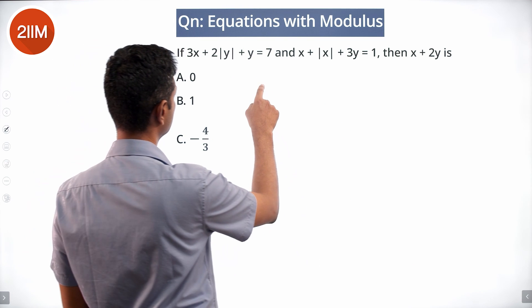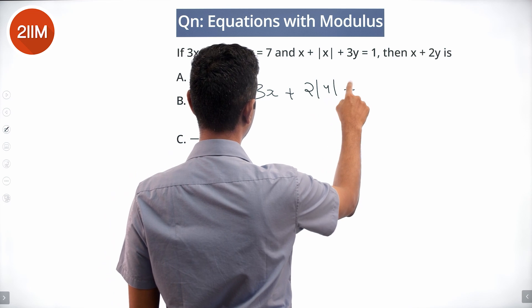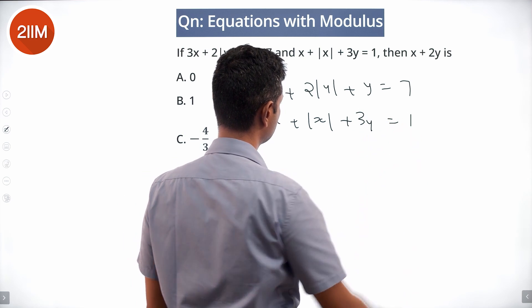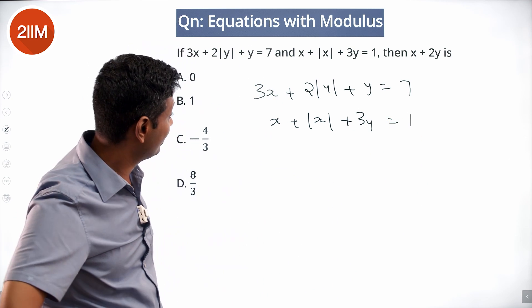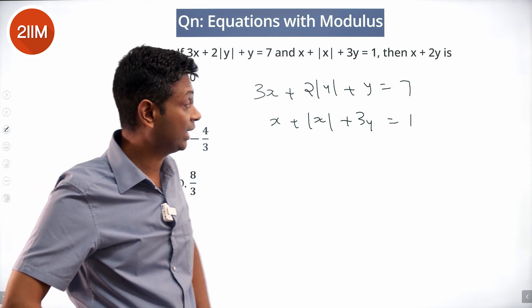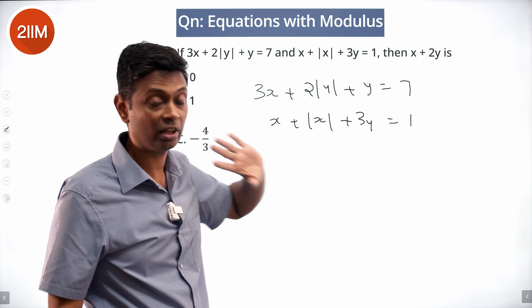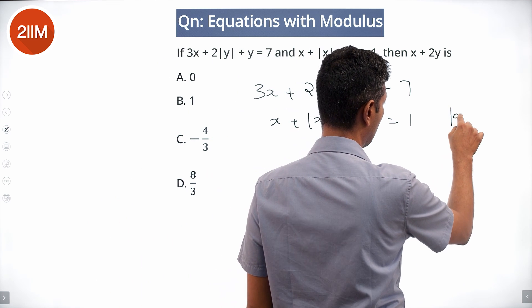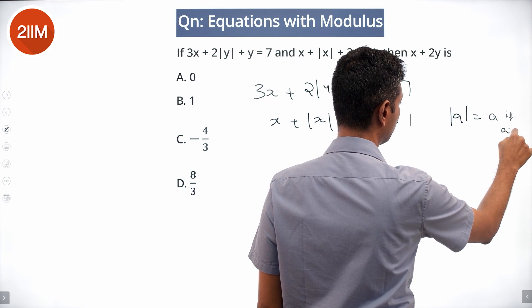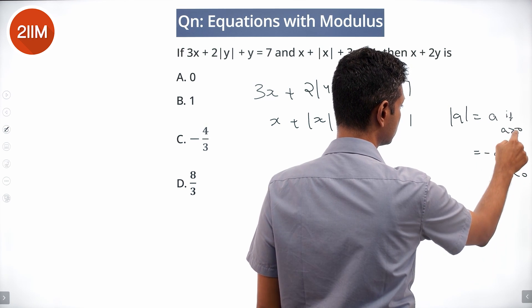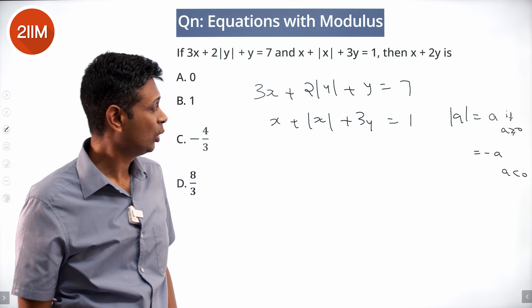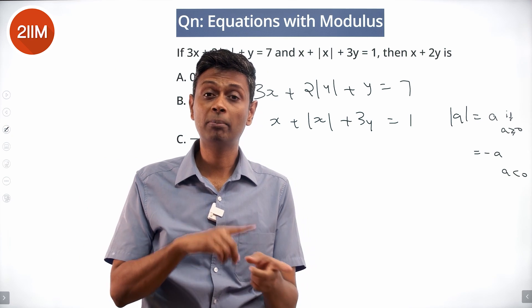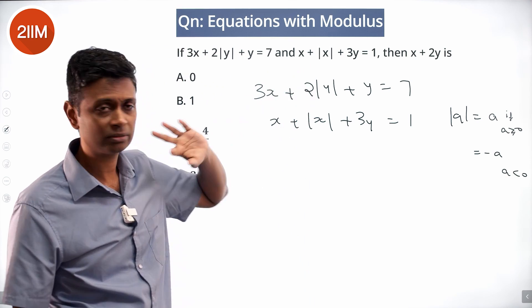Given: 3x + 2|y| + y = 7 and x + |x| + 3y = 1. Find x + 2y. Since |a| = a if a ≥ 0 and −a if a < 0, we try different sign combinations. Note that x + |x| = 0 when x is negative.